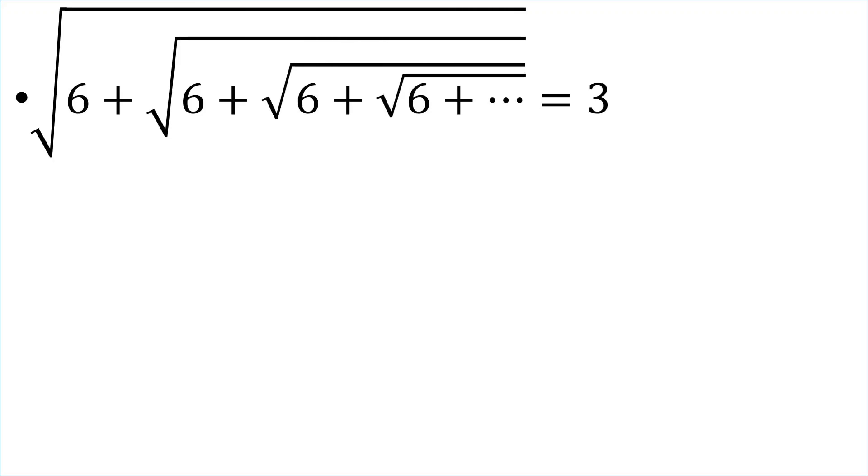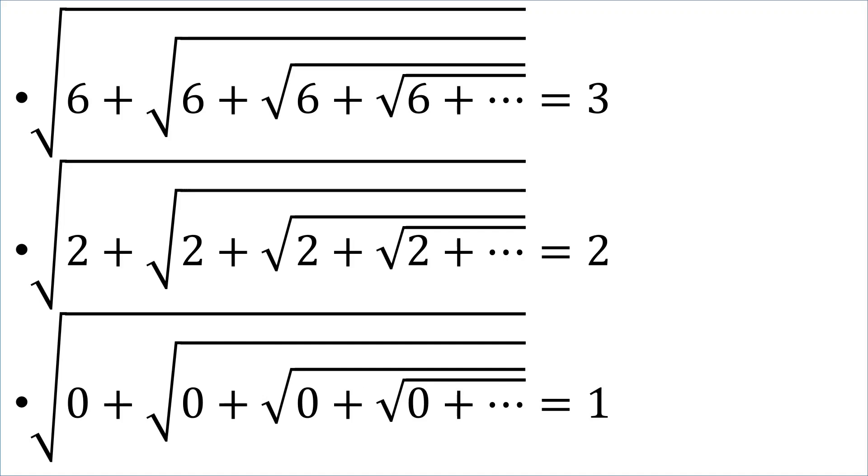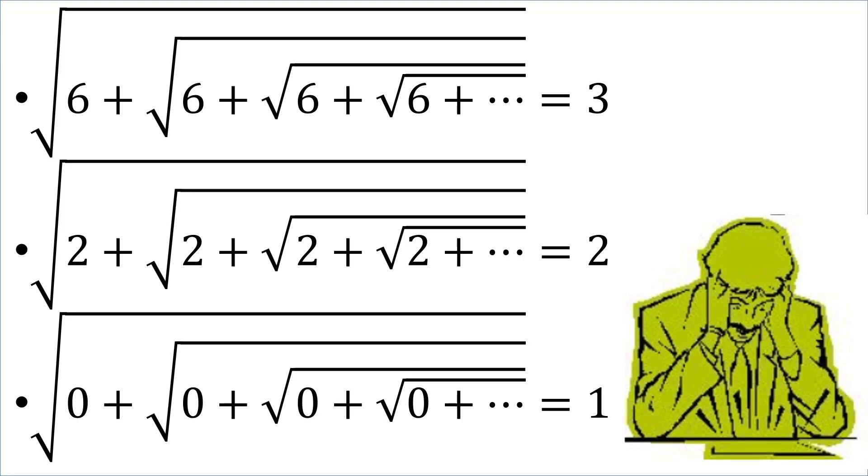Because it seems like we have a pattern. The square root of 6 infinitely is equal to 3. The square root of 2 infinitely is equal to 2. And the square root of 0 infinitely is equal to 1. Did I really make a mistake in this video here? Please let me know in the comments below. Because I'm hurting my head. The green man is hurting his head.